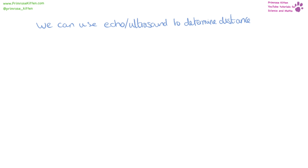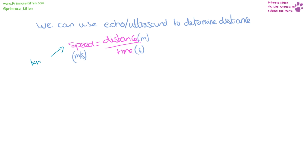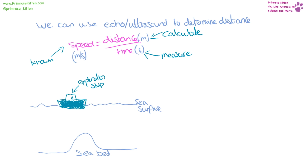We can use echo or ultrasound to determine distance, because speed equals distance over time. So if we know the speed of the wave and we measure the time taken, we can calculate the distance. A vessel exploring the sea can send down an ultrasound and measure the time it takes to come back. The really important thing to note is that it is there and back again, so the time is double what it would be — the time it takes to get there and back is twice the time it takes just to get there. So if you have an echo or ultrasound calculation and you need to find distance, you need to think logically about the time value you are using.